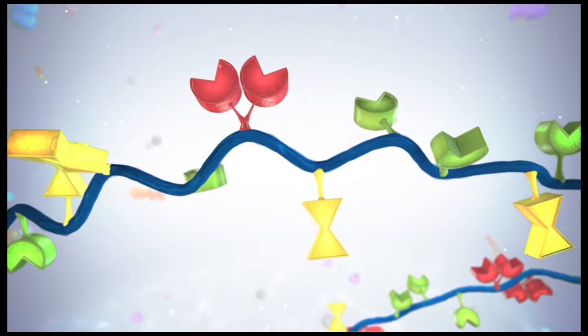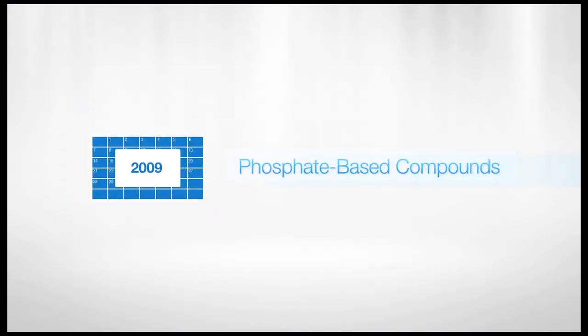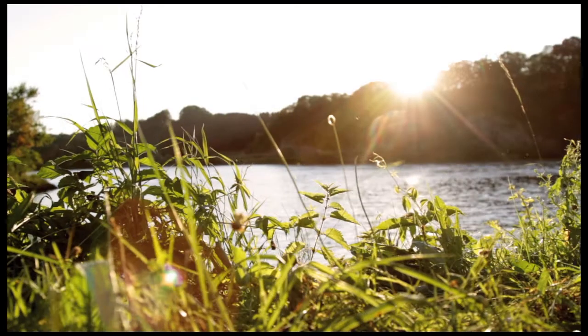This allows the formulation of phosphate-free automatic dish detergents. In 2009, many countries began restricting the use of phosphate-based compounds in automatic dishwashing detergents and other home care products due to environmental concerns.